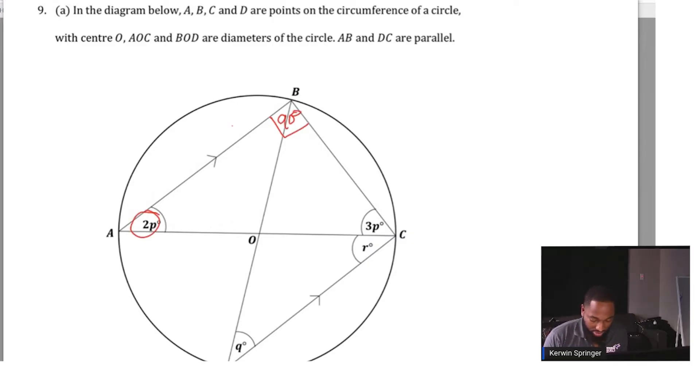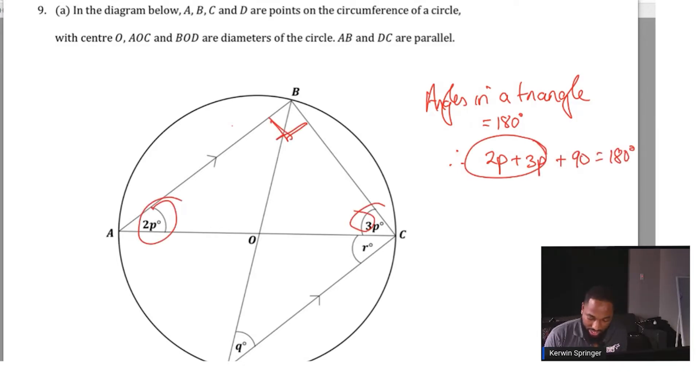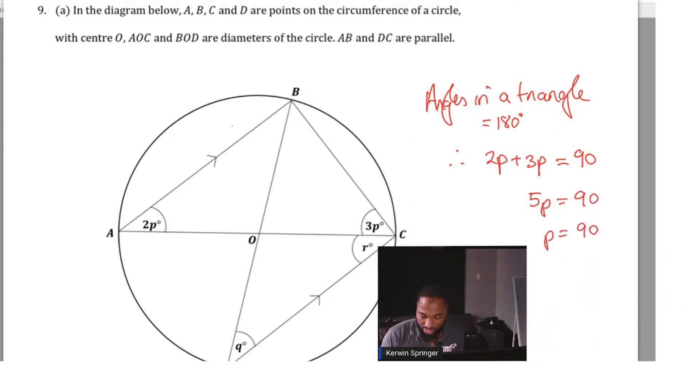So I would write: angles in a triangle equal 180 degrees. Therefore, 2p plus 3p must be equal to 90, or I can write it like the 90 degrees plus the other angles must equal 180 degrees. So 2p plus 3p must add up to 90 degrees. We have 5p equal to 90 degrees, and p is equal to 90 divided by 5.